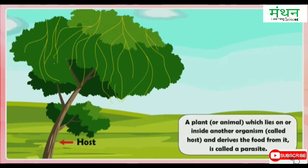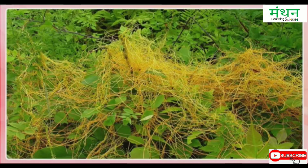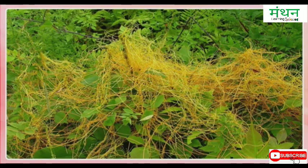Parasites. A plant or animal which lives on or inside another organism called a host and derives food from it is called a parasite. An example of a parasite plant is Cuscuta. A Cuscuta plant does not have chlorophyll — it is yellow in color — and therefore cannot synthesize its own food. It takes ready-made food from the tree or plant on which it climbs.